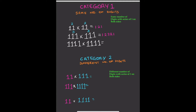Now let's do 1111 times 1111. There are four digits on both sides, so we start from 1, go up to 4, then decrease back to 1 again. So it's going to be 1, 2, 3, 4, then 3, 2, 1. The answer is 1, 2, 3, 4, 3, 2, 1. That's category one done.